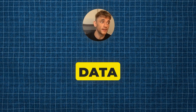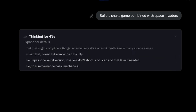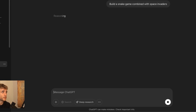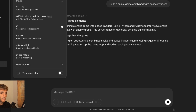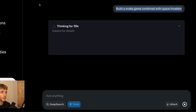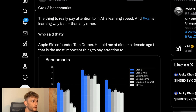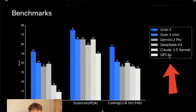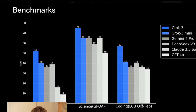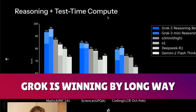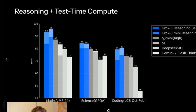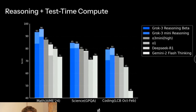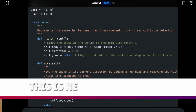The thinking mode does seem to take longer than usual. We can compare this to ChatGPT — I'm going to switch to o3 mini, which is a more recent model. Looking at benchmarks shared by Robert Scoble from Elon's live stream: for math, science, and coding, Grok is winning by a long way. And for reasoning, comparing against o3 mini, o1, DeepSeek, and Gemini Flash 2 Thinking — Grok dominates on those benchmarks, though take them with a pinch of salt.